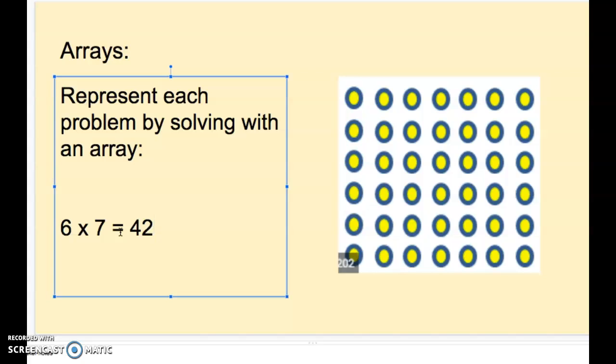Awesome work, fourth graders. So today you're going to be using arrays to help you solve for some multiplication equations. The biggest thing we need to remember, rows go horizontally. Columns go vertically. All right, guys, let's get started.